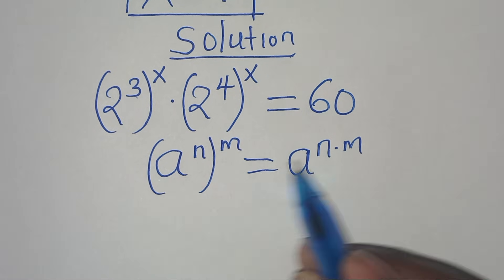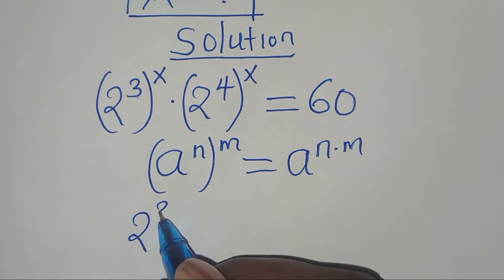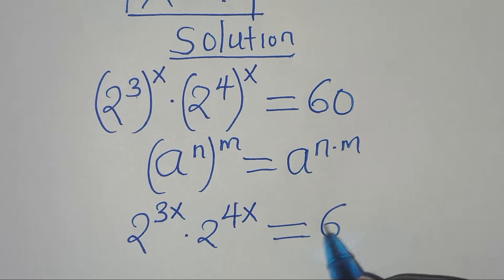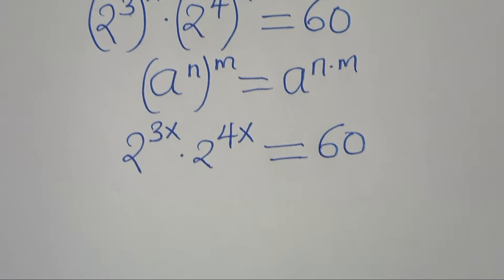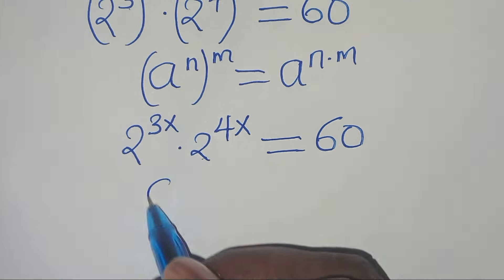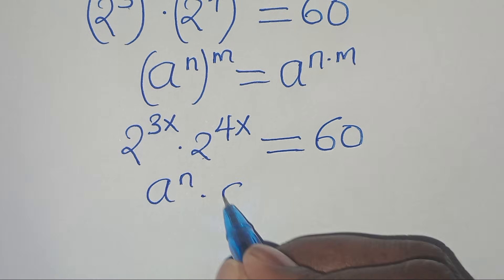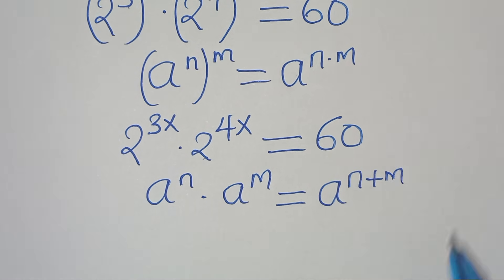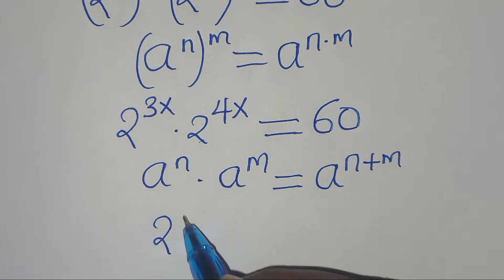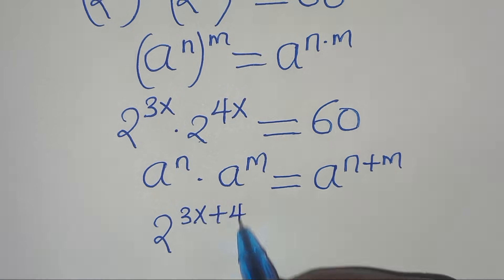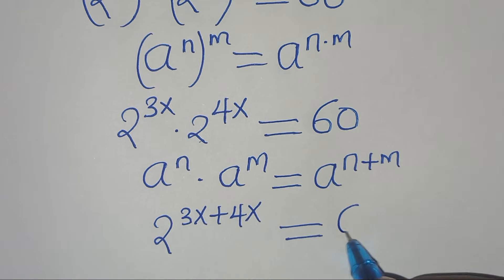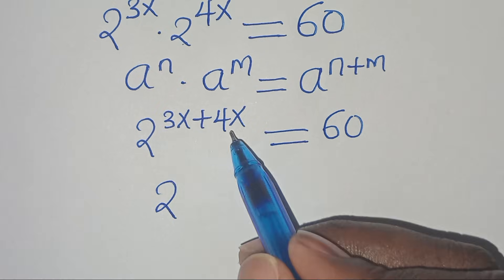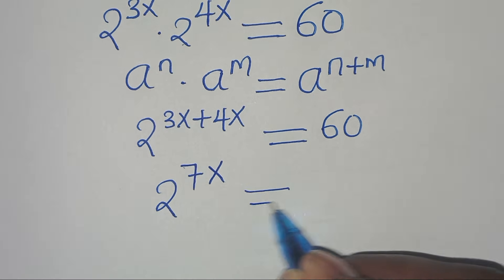Applying this exponent property we have 2 to the power of 3x times 2 to the power of 4x. This is in the form of a to the power of n times a to the power of m, which we can express as a to the power of n plus m. Applying this property, we have 2 to the power of 3x plus 4x, which is 7x, and this is equal to 60.